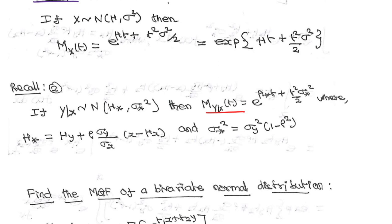We already know that mu-star equals mu_y plus rho times sigma_y divided by sigma_x times (x minus mu_x), and sigma-star squared equals sigma_y squared times (1 minus rho squared). These are the known values we will use to find the moment generating function of the bivariate distribution.